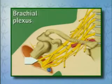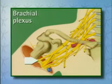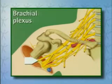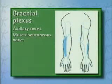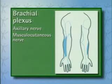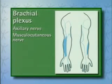The musculocutaneous nerve passes between the biceps and the brachialis muscle to the lateral arm. It supplies sensory fibers to the radial side of the forearm and motor fibers to all flexors of the upper arm.